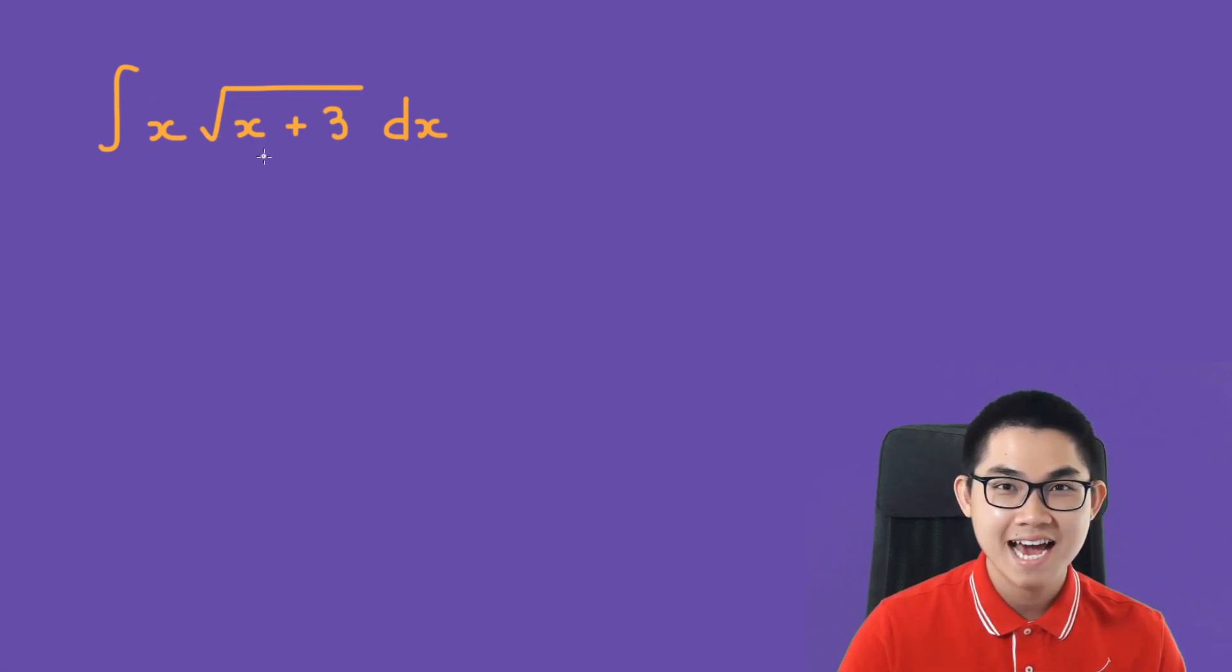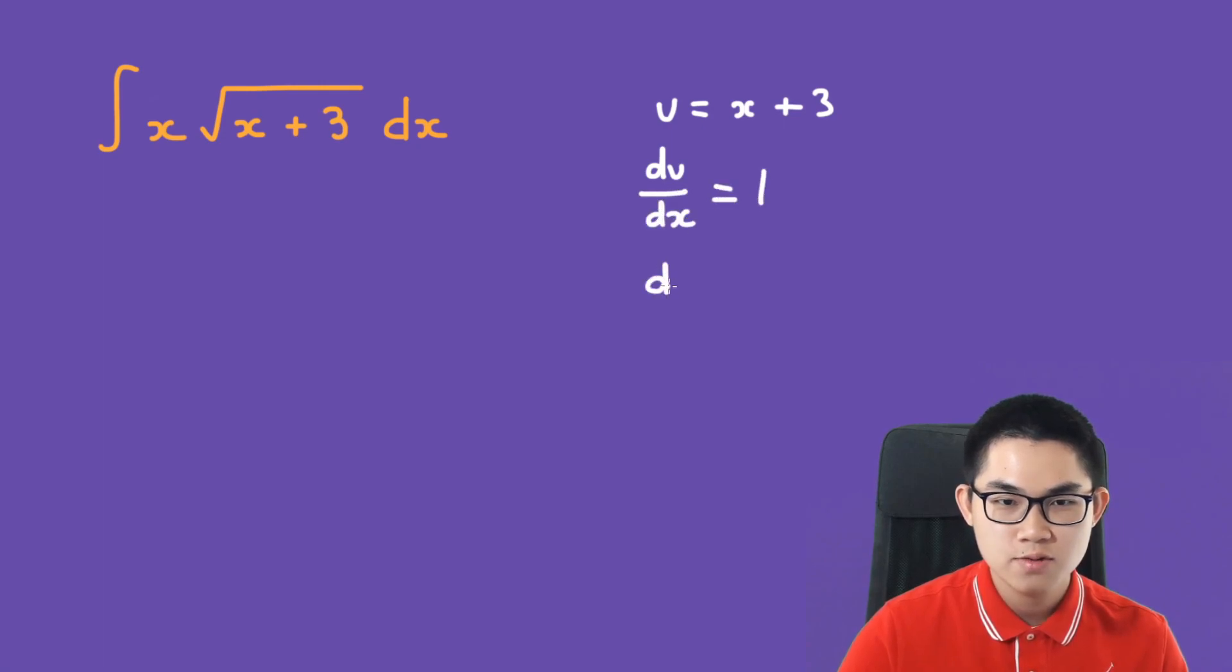The integral of x times the square root of x plus 3 dx. So let u equal x plus 3. Then du over dx is 1, so du is dx.